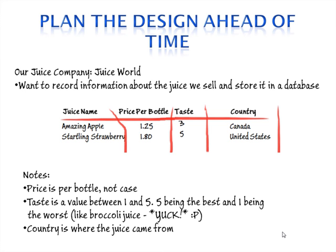Let's pretend we have a company called Juice World and we're going to store information about different types of juice. We're going to record the juice name — with cool names like Amazing Apple and Startling Strawberry — and also the price per bottle.